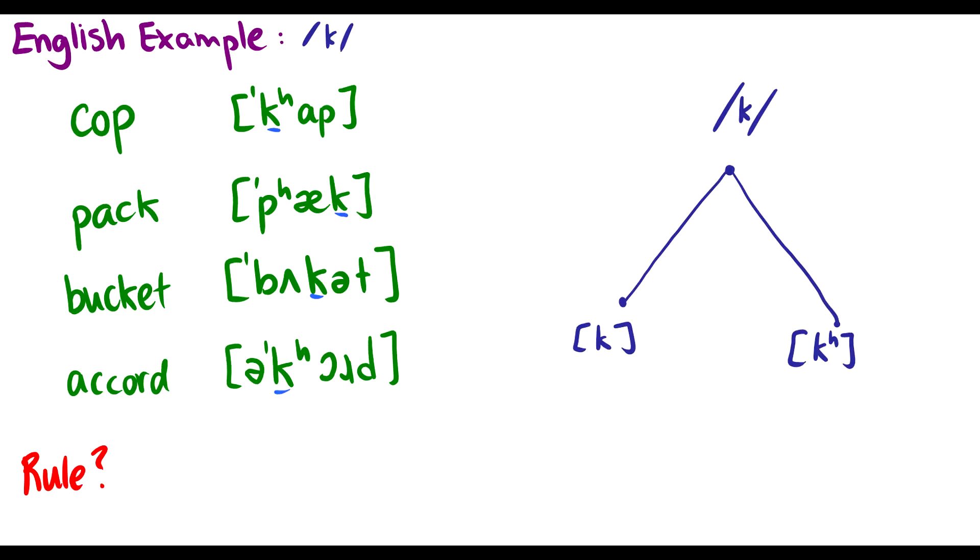So let's take a look at English. We have four words here. We have cop, pack, bucket, and accord. So we're looking at these k's here. So this k, the k, the k, and k. What do we notice? Two of these have aspiration in them. This h at the top is aspiration meaning when we say k air flows out of the mouth. Well when we say pack there's not really a burst of air at the end or bucket. There's no burst of air after the k. So the other thing I should point out is that of course these markers here are stress markers. That's where primary stress is which is important for this analysis.